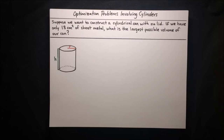In this video, I'm going to show you how to solve optimization problems involving cylinders. Suppose we want to construct a cylindrical can with no lid. If we have only 18 square centimeters of sheet metal, what is the largest possible volume of our can?